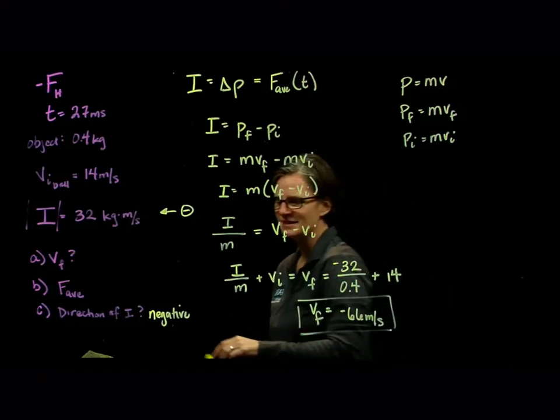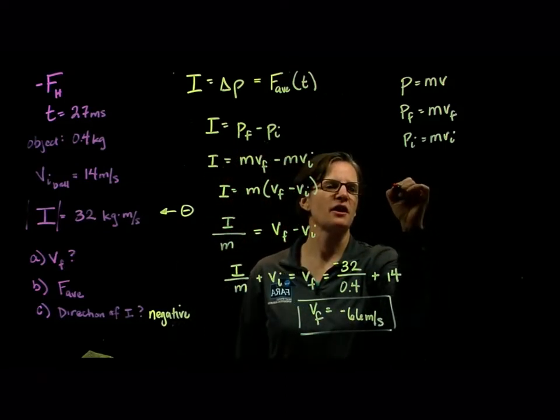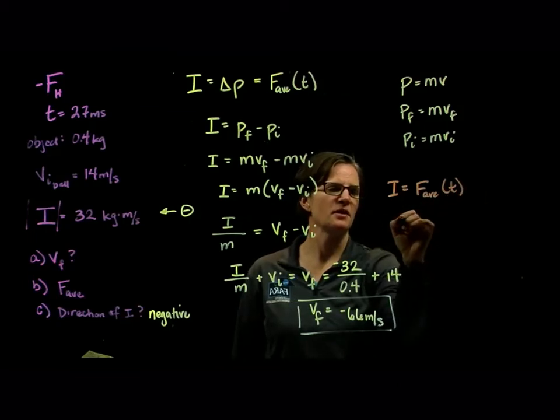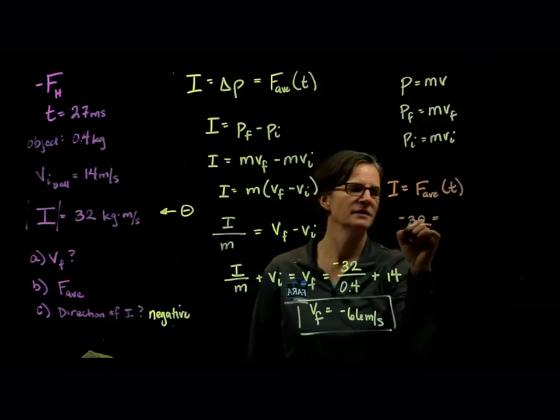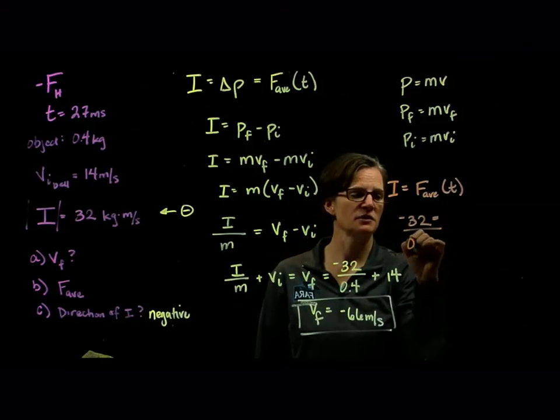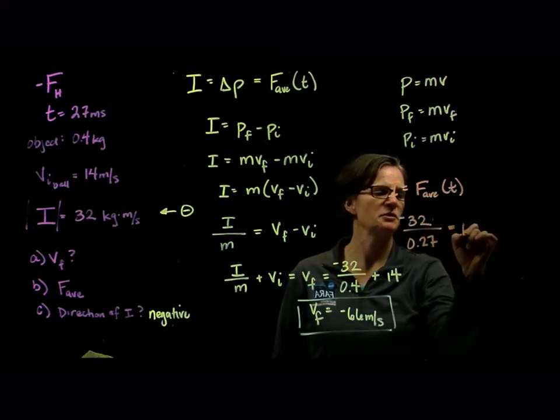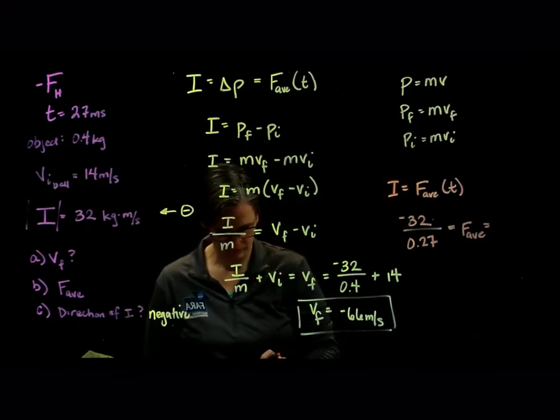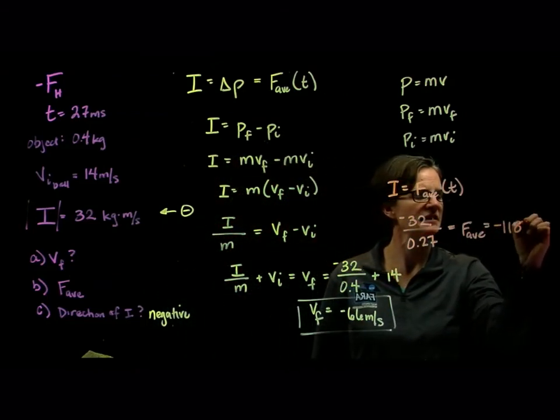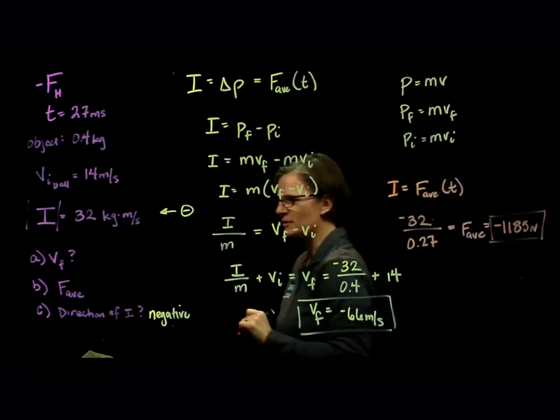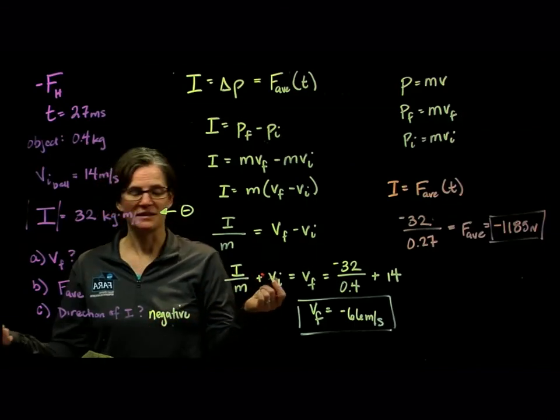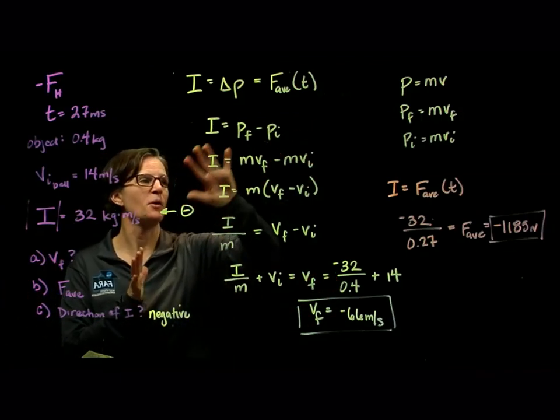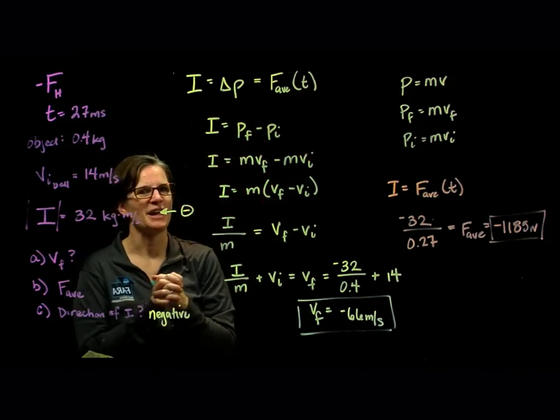The last part, part B, is to find the average force. And we're going to keep in mind that our impulse is equal to the average force times time. My impulse of negative 32 divided by the time of 27 milliseconds, so 0.027, is equal to the average force, which is equal to negative 1185 newtons. So that appropriate direction. The magnitude, which is actually asked for in the problem, of course, is just the size of that force. So working with our impulse relationship in both as a change in momentum and as a force times time. Good job.